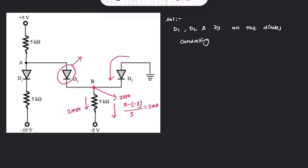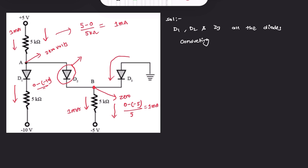With zero volts at the node, the current through D2 is 5 minus 0 over 5 kΩ, which is 1 milliampere. Similarly for diode D1, the node is at zero volts. The current through D1 is zero minus (-10) over 5 kΩ, which gives 2 milliamperes.